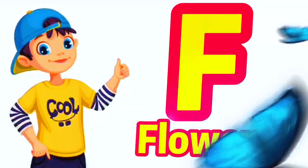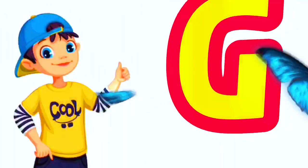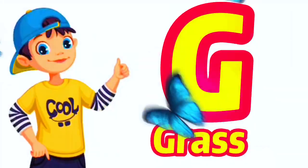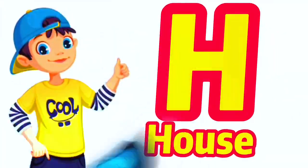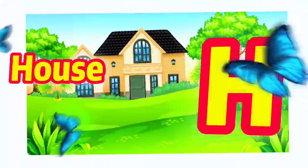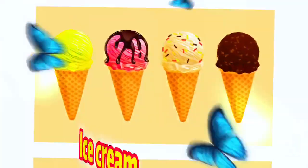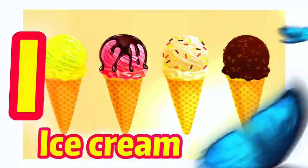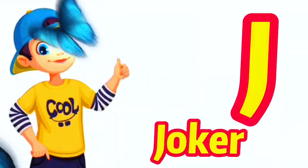A for flowway, G for grass, H for house, I for ice cream, J for joker.